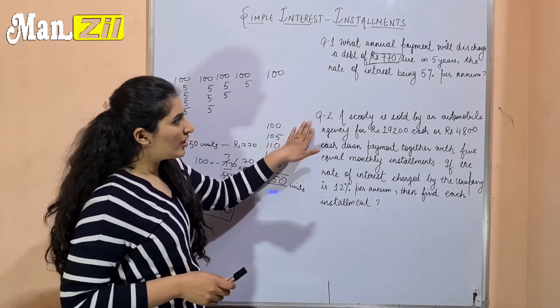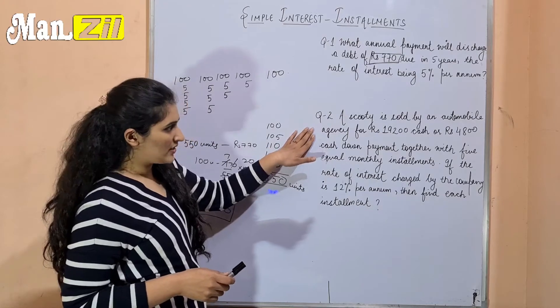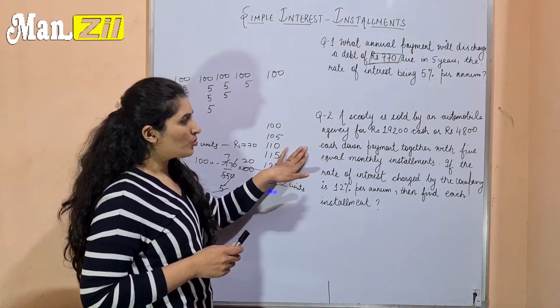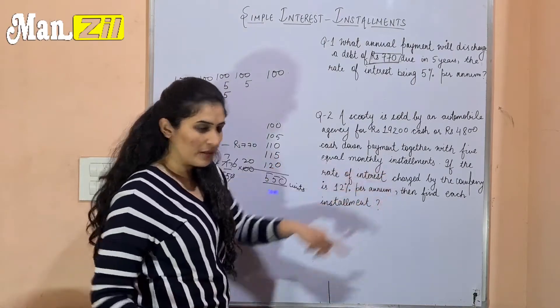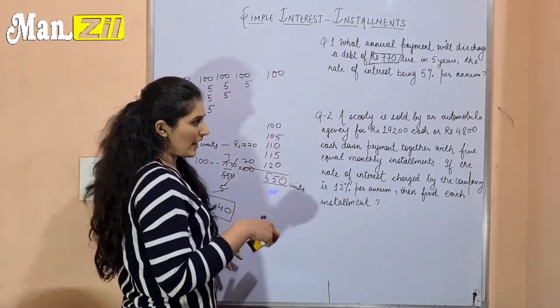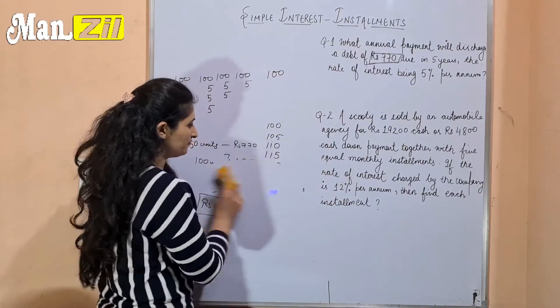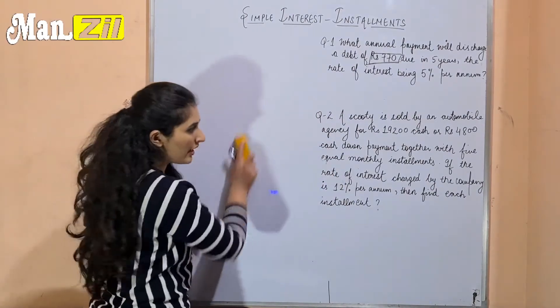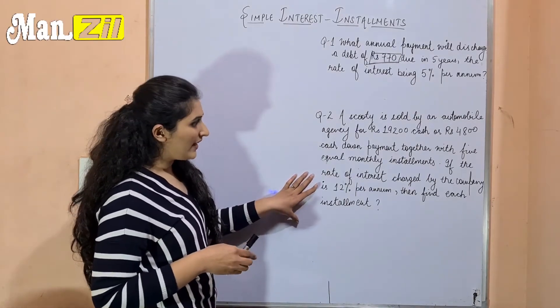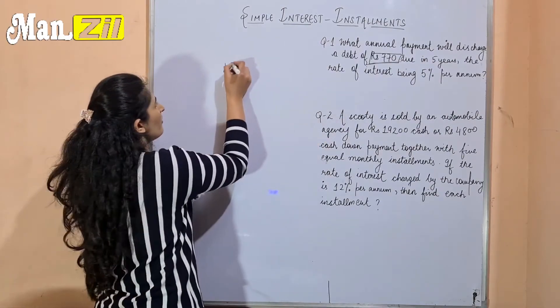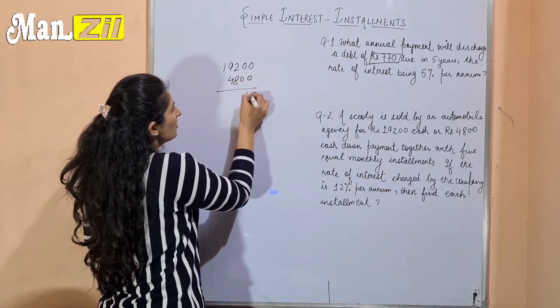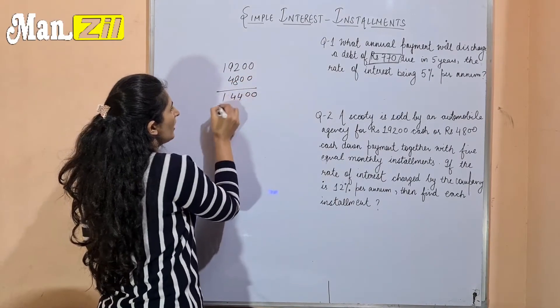A scooty is sold by an automobile agency for Rs. 19,200 cash or Rs. 4,500 cash down payment together with 5 equal monthly installments. If the rate of interest charged by the company is 12% per annum, then find each installment. First step is the purchase is 19,200 but there's 4,800 down payment, so the remaining amount will be 14,400.